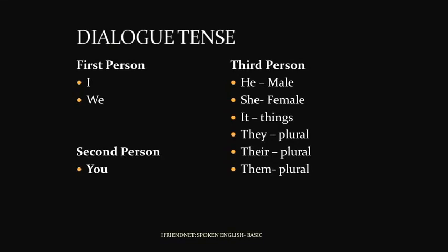Now let's look at the third person. For a boy or man, you address as 'he'. For a girl or woman, you address as 'she'. For things like books, chairs, or tables, you address as 'it'. And when there's more than one person, you say 'they'.